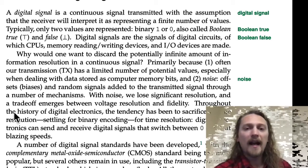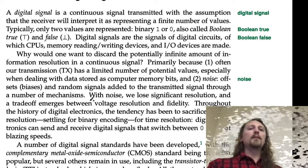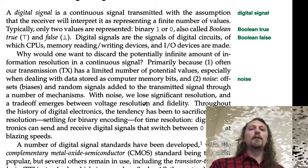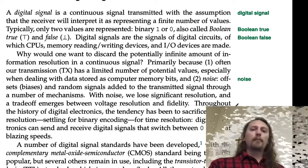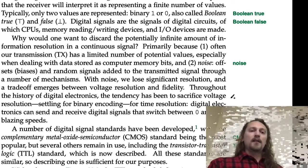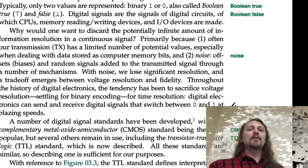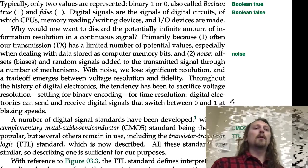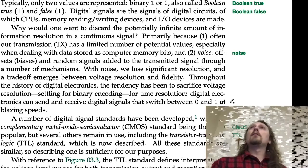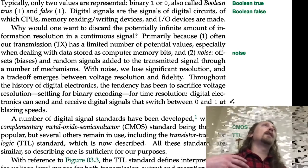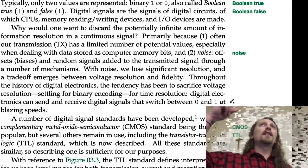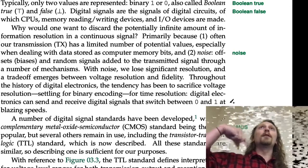And two: noise. In the form of offsets, biases, and random signals added to the transmitted signal through a number of mechanisms. With noise, we lose significant resolution and a trade-off emerges between voltage resolution and fidelity. Throughout the history of digital electronics, the tendency has been to sacrifice voltage resolution, settling for binary encoding, for time resolution. Digital electronics can send and receive signals that switch between zero and one at blazing speeds. So it's turned out that for most of our technologies, it's way faster to transmit information with just a binary encoding and switching between the two levels very, very rapidly.